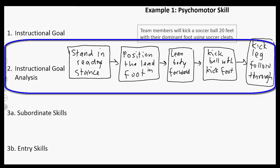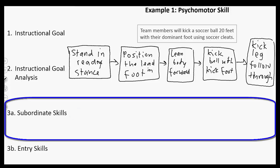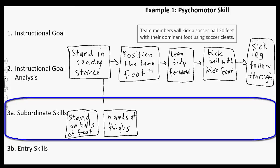Let's look at the subordinate skills analysis. What are some things learners need to be able to do to perform these steps? For standing in the ready stance, I think there are several things they need to do. One is stand on the balls of their feet — standing on their toes so they're ready to go. Another is have their hands at their thighs. Those are some good subordinate skills for standing in the ready stance.